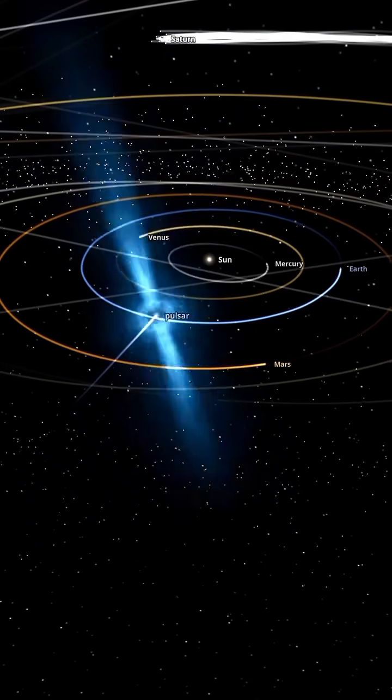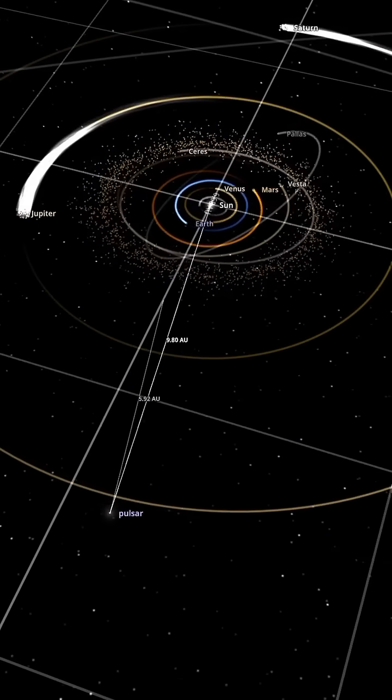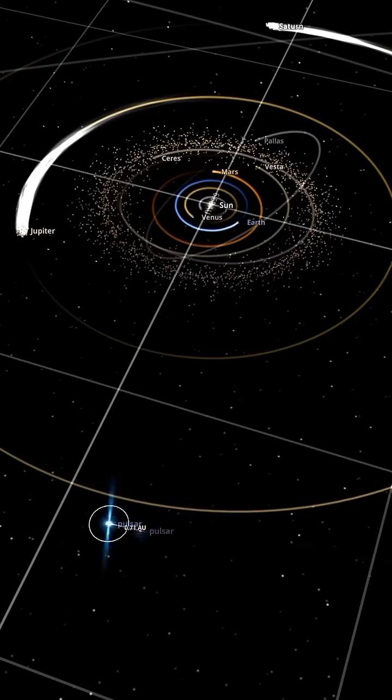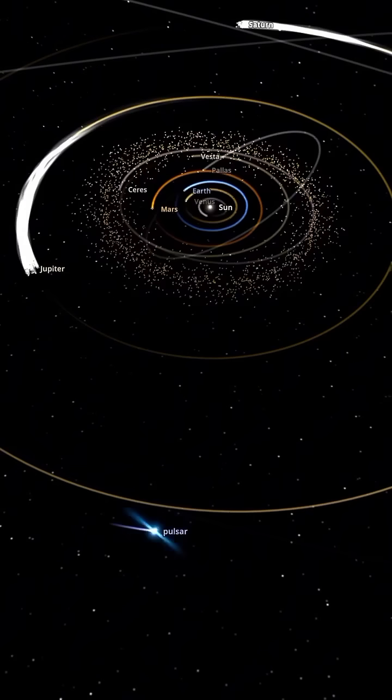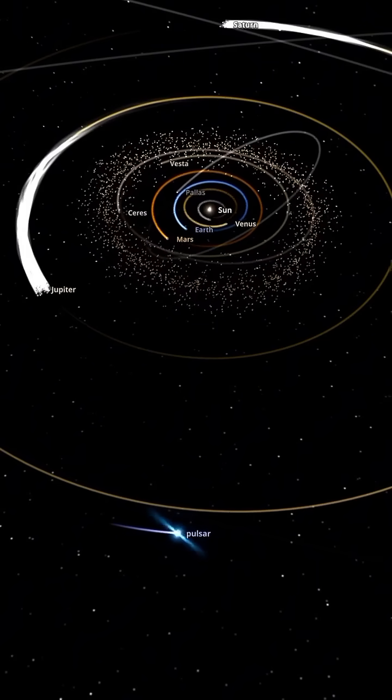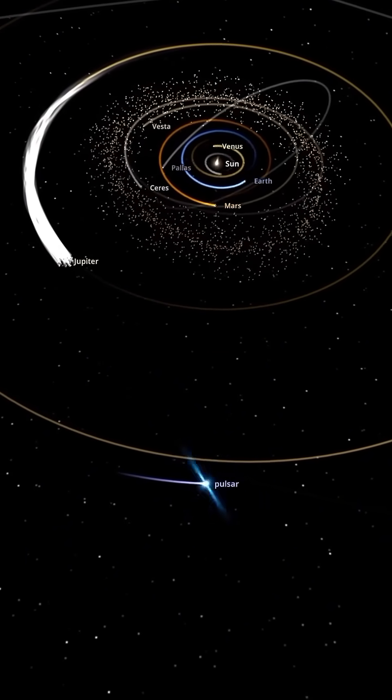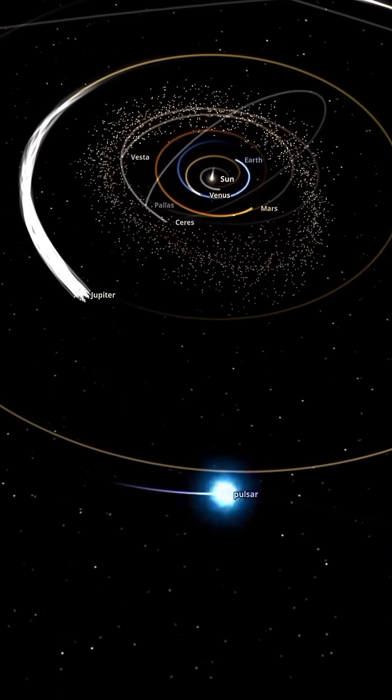What happens if a pulsar enters our solar system? Let's place a pulsar, a neutron star with 1.7 times the mass of our sun, just 10 astronomical units away from the sun. This pulsar is incredibly dense, squeezing all that mass into a sphere only about 3 miles across.